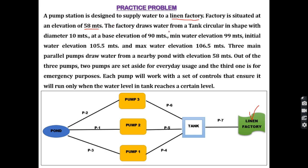The factory draws water from a circular tank with a diameter of 10 meters. Its base elevation is 90 meters, minimum water elevation is 99 meters, initial water elevation is 105.5, and maximum water elevation is 106.5. So the minimum water elevation is 99 meters and the base elevation is 90 meters, meaning the water level in the tank should be at least 9 meters at any time.